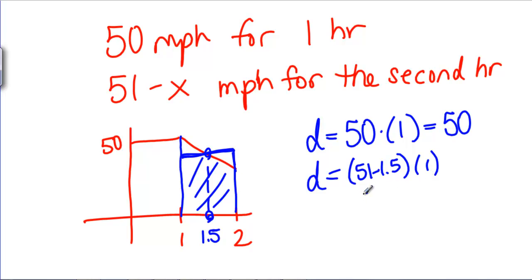This would be 49.5 times 1, which is 49.5. Or adding these together, we would say we've gone 99.5 miles in the two hours.